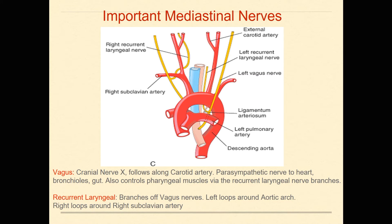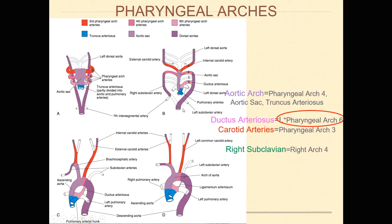Some other important mediastinal things are nerves oriented around this arch. During embryological development, the right subclavian branches off and forms its own thing over here. We have nerves that come right under those arches — the right and left recurrent laryngeal nerves, which are branches off of the vagus nerve. These nerves come right through this little loop and come back up.